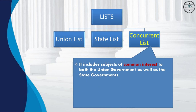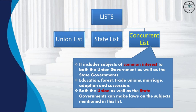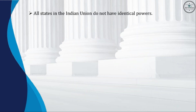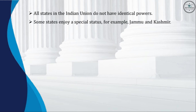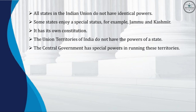The Concurrent List includes subjects of common interest to both the union and state governments, such as education, forest, trade unions, marriage, adoption, and succession. Both the union and state governments can make laws on subjects in this list. Not all states in the Indian union have identical powers; some states enjoy a special status, for example Jammu and Kashmir, which has its own constitution. Union territories do not have the powers of a state, and the central government has special powers in running these territories.